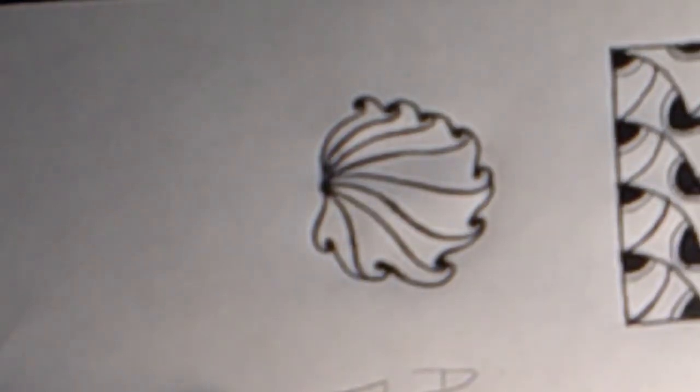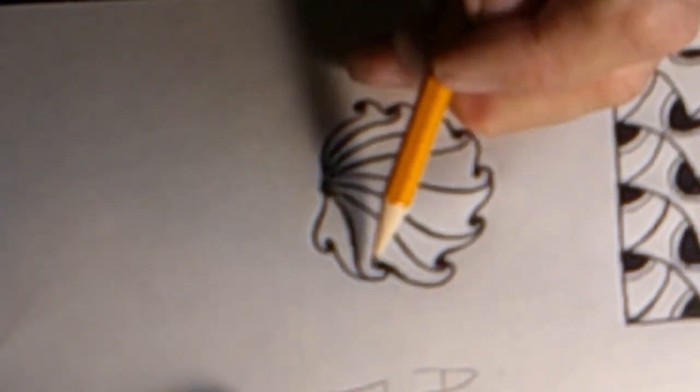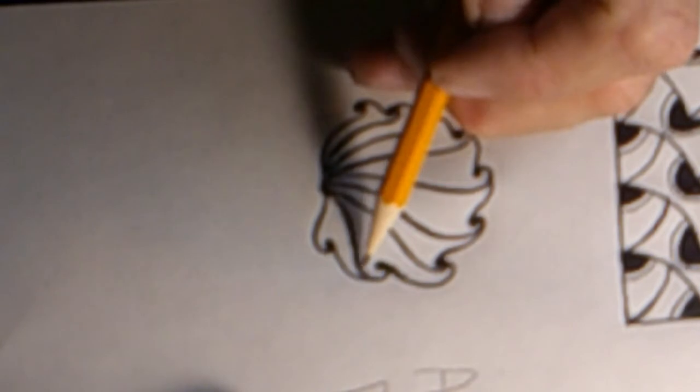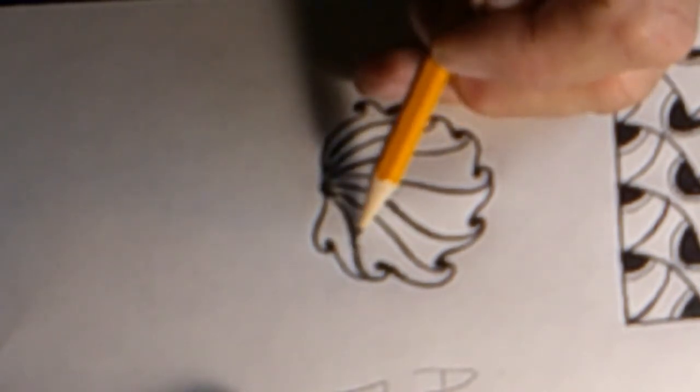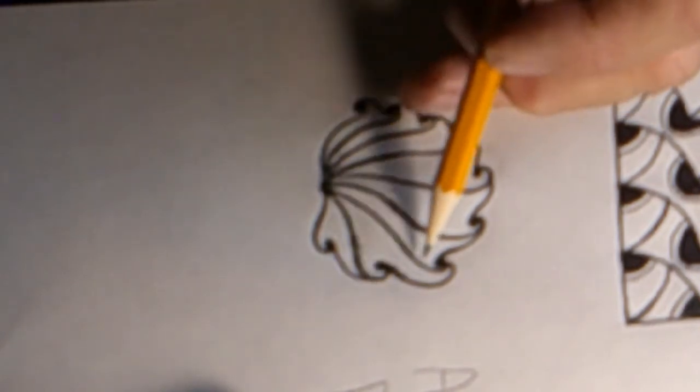All righty, now for our last step let's add just a tiny bit of shading, shading right in here where it appears that this one overlaps this one. We won't add too much.